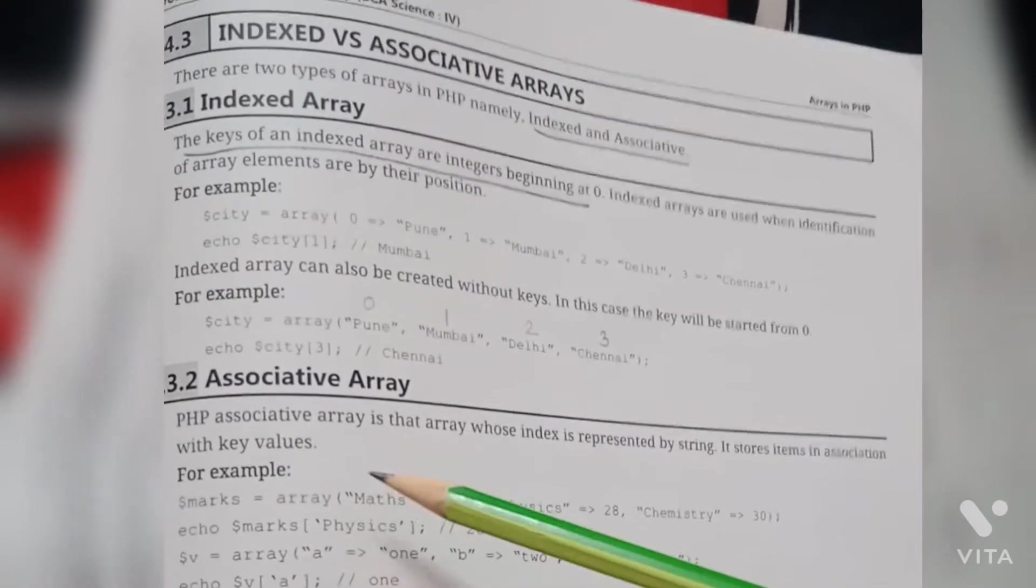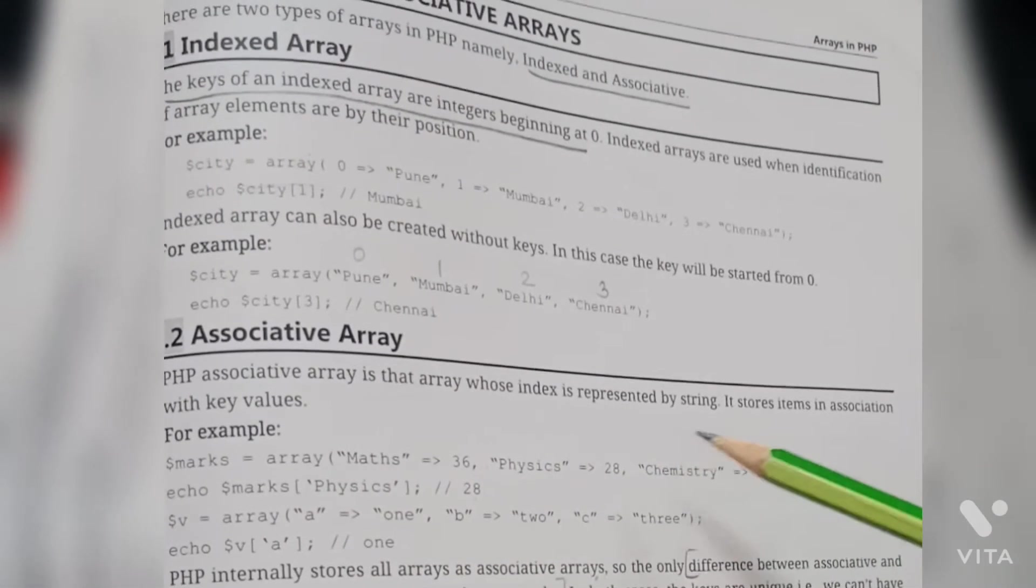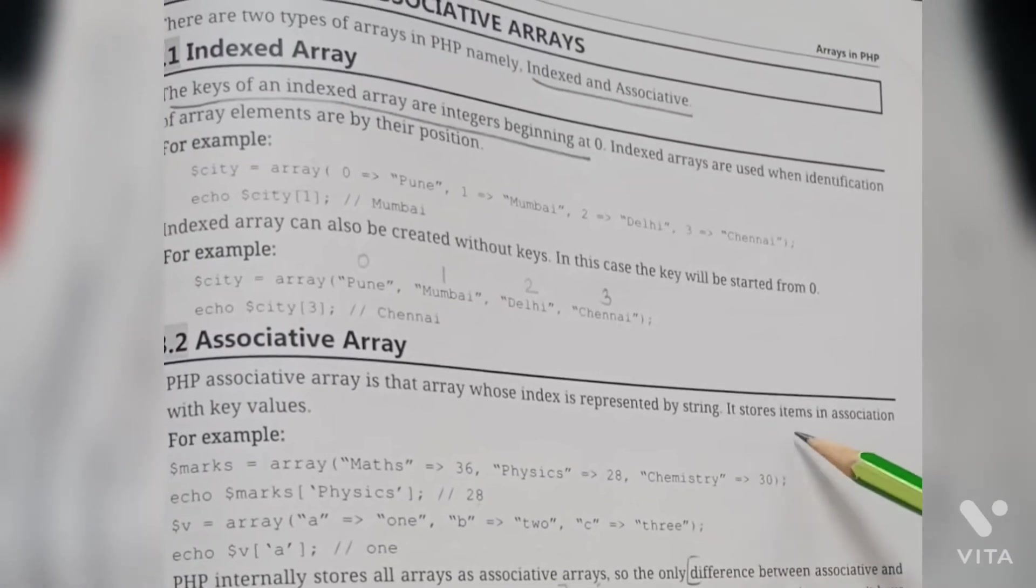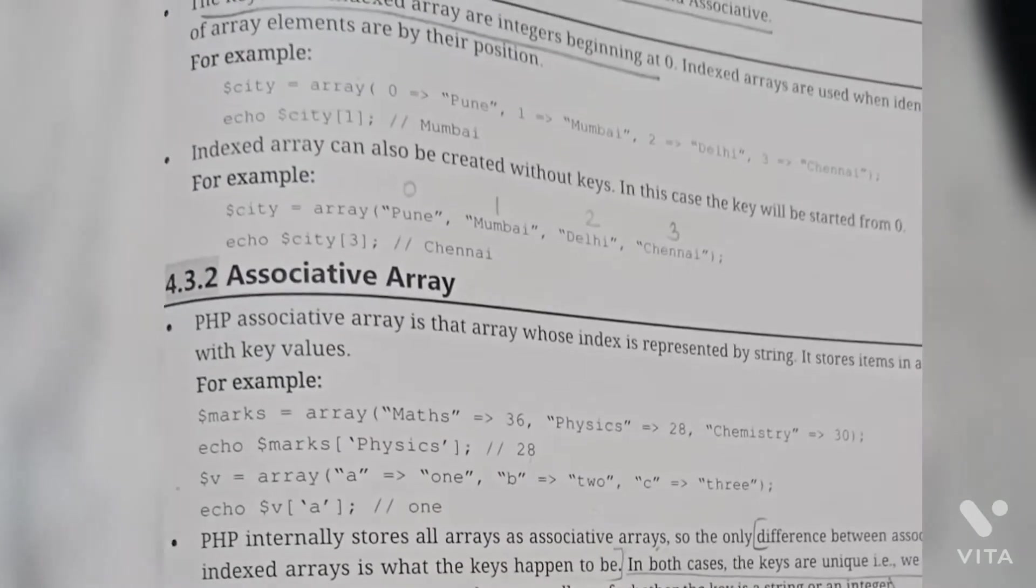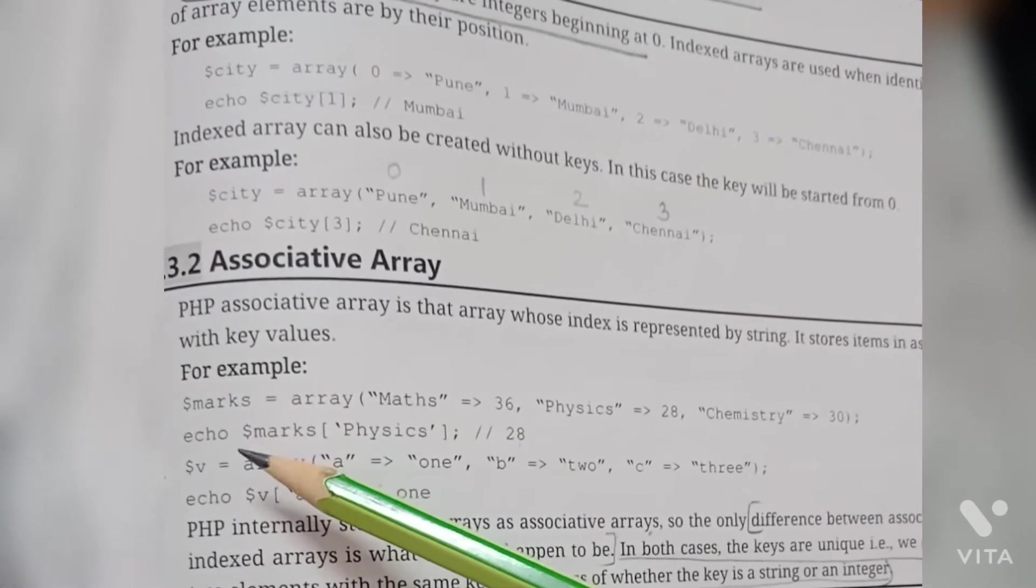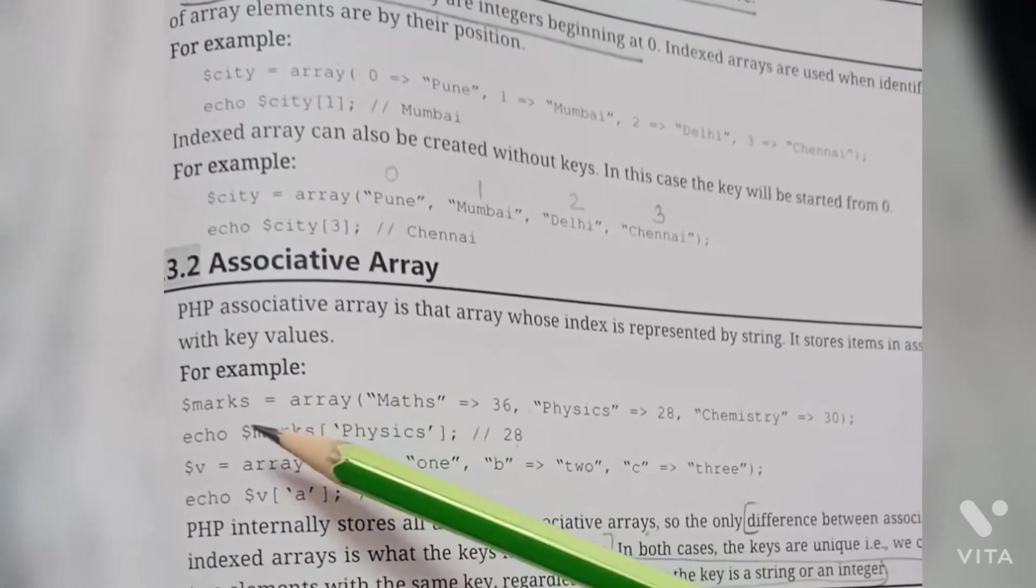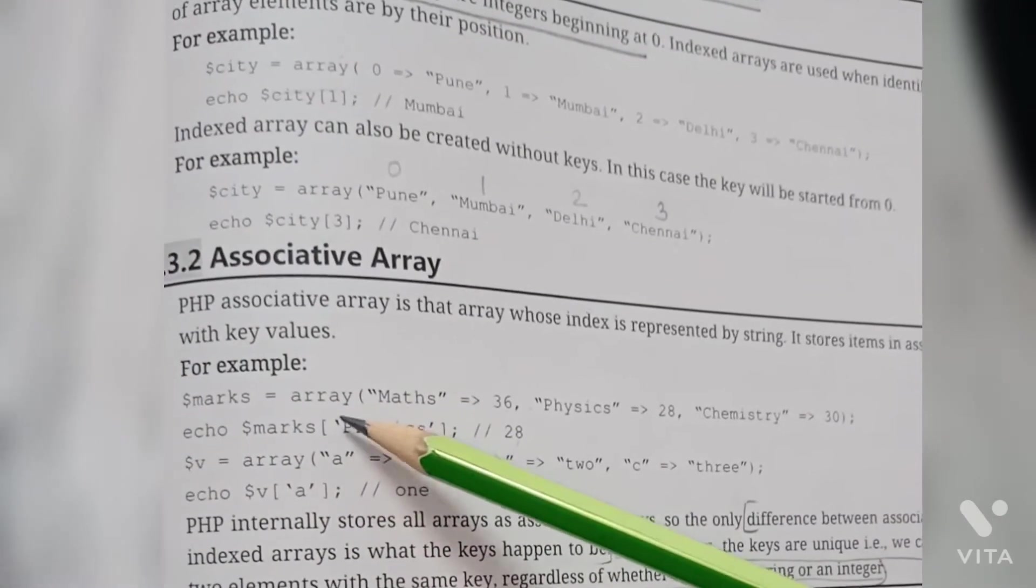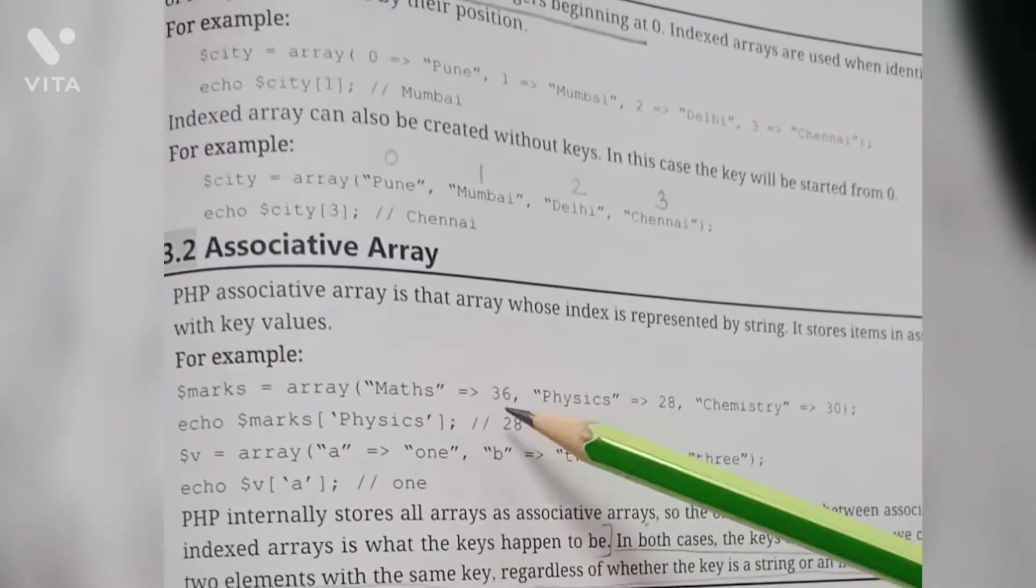PHP associative array is that array whose index is represented by string. It stores items in association with key values. Look at this example: dollar marks equals to array, maths arrow 36, physics arrow 28, chemistry arrow 30 and semicolon.